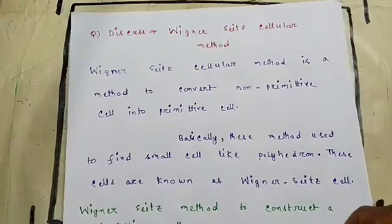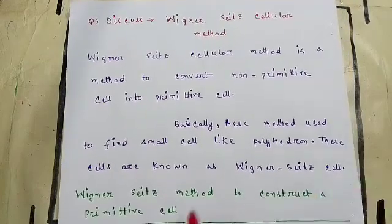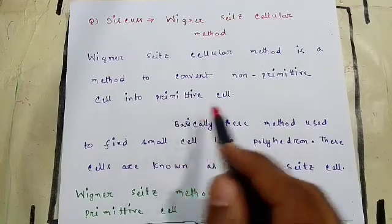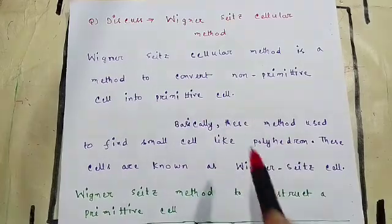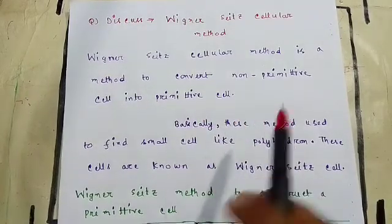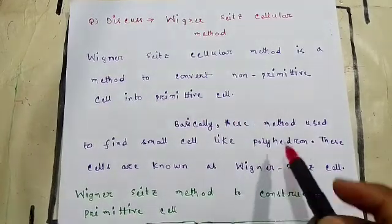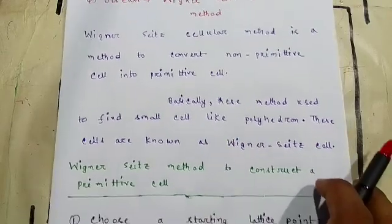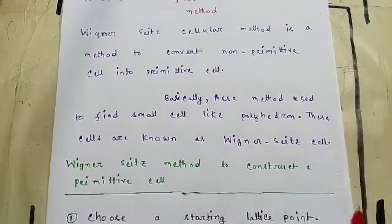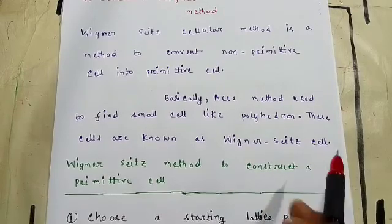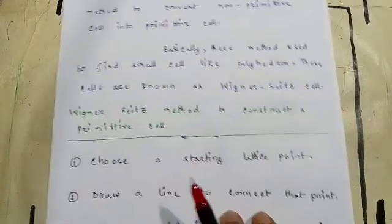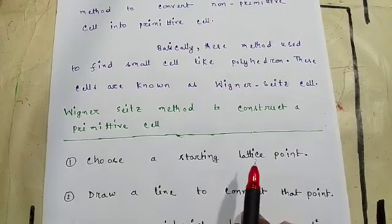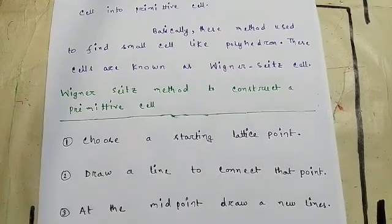So what is the Wigner-Seitz cellular method? Wigner-Seitz's cellular method is a method to convert a non-primitive cell into a primitive cell. Basically this method is used to find a small cell like a polyhedron. These cells are called Wigner-Seitz cells.